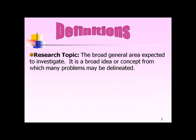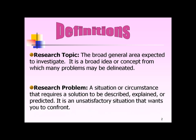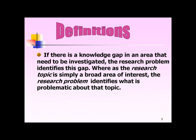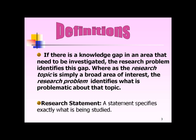Definitions. A research topic is a broad, general area expected to investigate — a broad idea or concept from which many problems may be delineated. A research problem is a situation or circumstance that requires a solution to be described, explained, or predicted. It is an unsatisfactory situation that wants you to confront. If there is a knowledge gap in an area that needs to be investigated, the research problem identifies this gap. Whereas the research topic is simply a broad area of interest, the research problem identifies what is problematic about that topic.